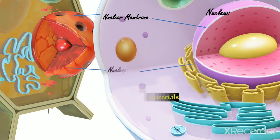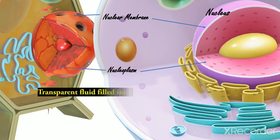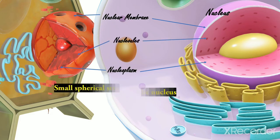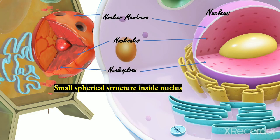Two, Nucleoplasm. It is the transparent fluid filled inside the nucleus. Three, Nucleolus. Small spherical structure found inside the nucleus. It contains ribonucleic acid, i.e. RNA. Chromosomes.